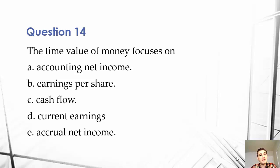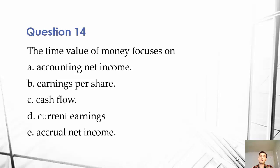The time value of money focuses on: A, accounting net income; B, earnings per share; C, cash flow; D, current earnings; or E, accrual net income.